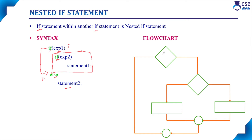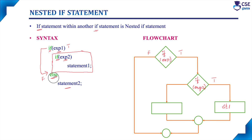Considering the flowchart: if expression 1 is true, it goes to the inner if expression 2. If expression 2 is true, statement 1 executes. When expression 2 evaluates to false, it should execute the else part. But the problem is that since this inner if does not have a paired else, it may pair with the outer else part. So the computer will consider that if expression 2 is false, it executes statement 2 — which is the dangling else problem.